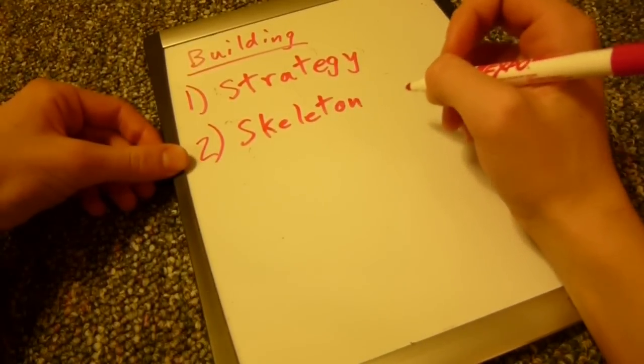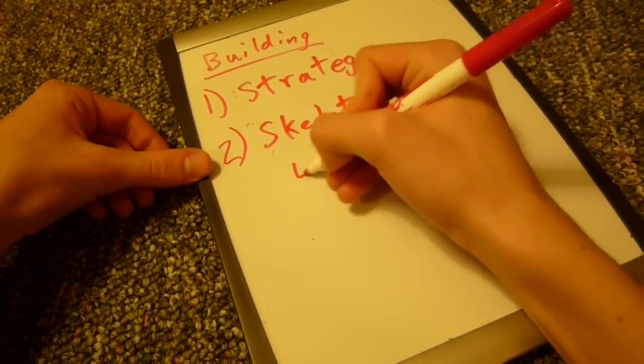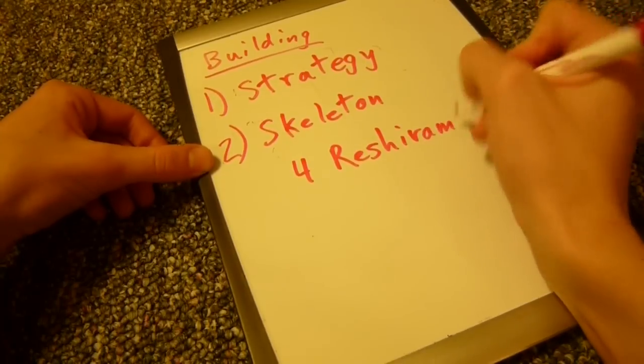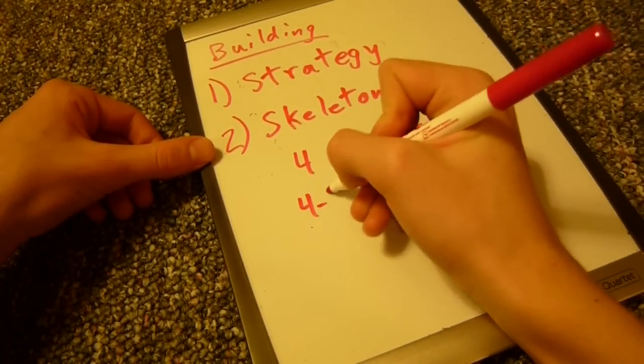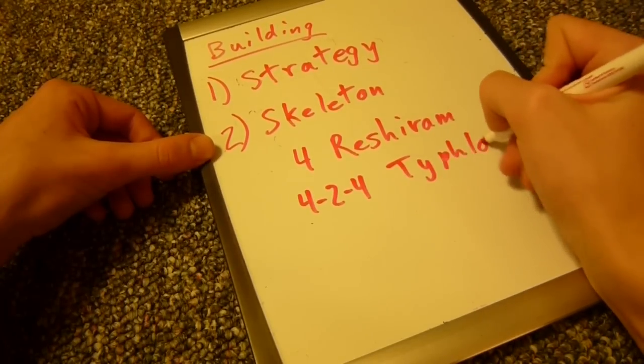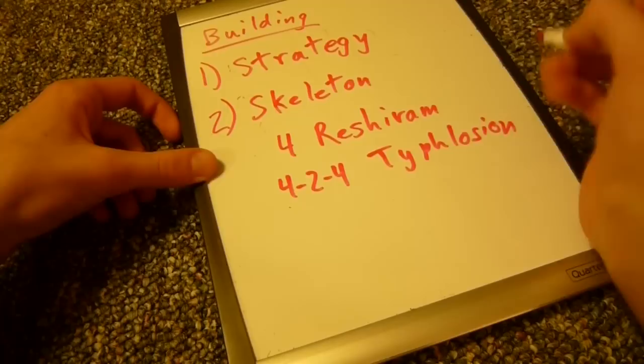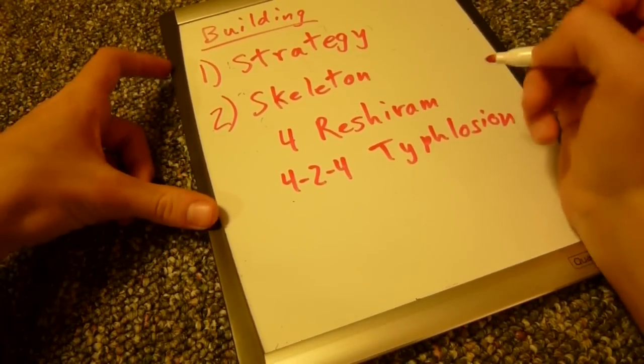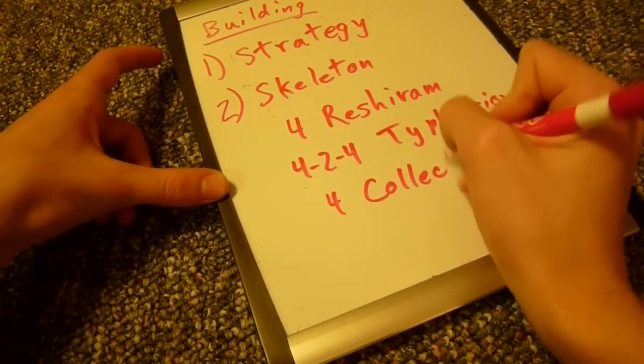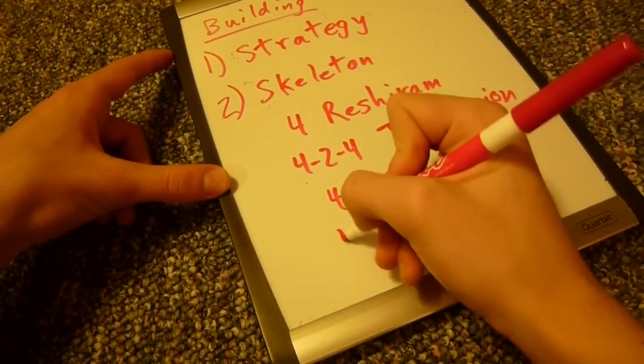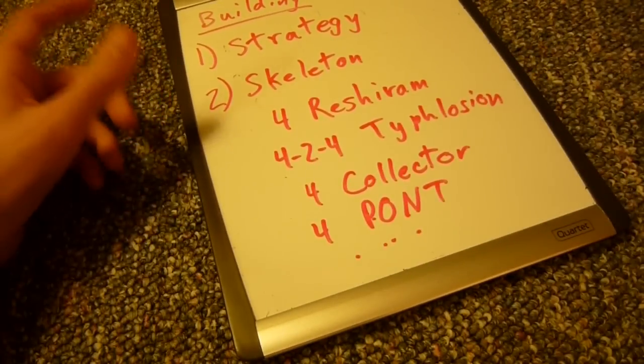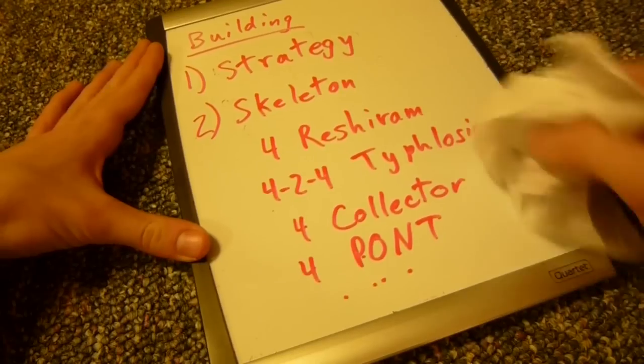So, maybe let's go with our Tyram example before. Let's try 4 Reshiram. And maybe, let's try a 4-2-4 Typhlosion. Typhlosion Prime, that is. And then we'll need our usual list of staples. Let's go with 4 Pokemon Collector. Maybe 4 Professor Oak's New Theory. And so on. And you'll draft your Skeleton of what you need to make your deck work.